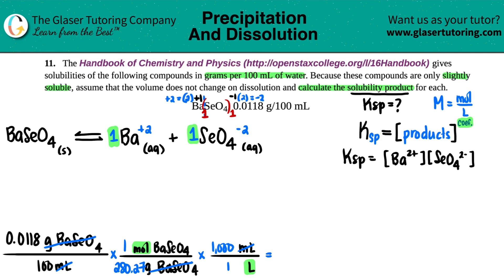So let's go for it. 0.0118 divided by 100 divided by 280.27. And then times by 1,000. So I get 4.21. I guess that's good enough. Actually, well, I guess we'll put in a zero there.